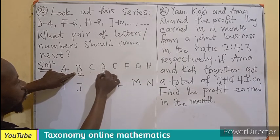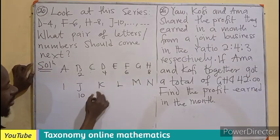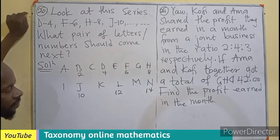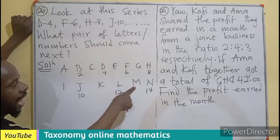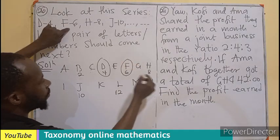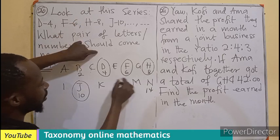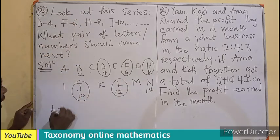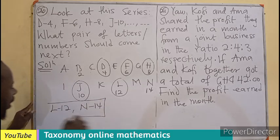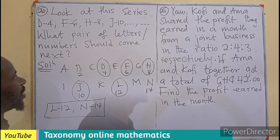For the numbers, we have 2, 4, 6, 8, 10 — increasing by 2 each time. So continuing the pattern, leaving each alternate letter out, the next two terms will be L12 and N14. This is the sequence of numbers and letters that will follow in this series.